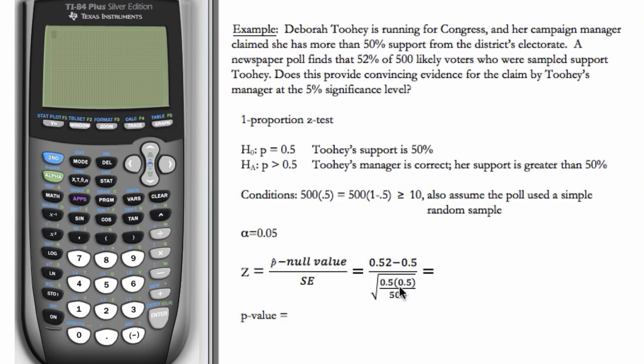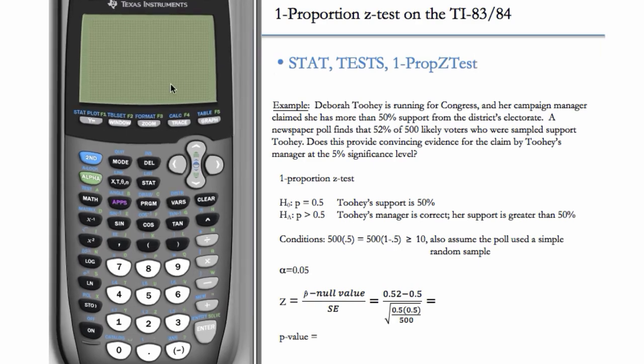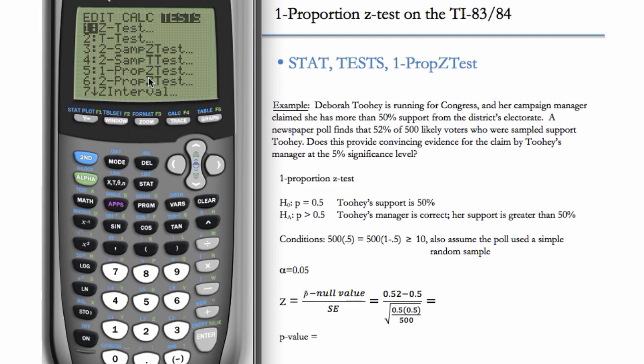Now that we have our problem set up, we can use the calculator to find the Z-statistic and the p-value. So we're going to want to go to stat-tests and do one proportion Z-test or one prop Z-test. Whenever we're working with proportions, we go stat-tests, we actually need the word prop in there. So we don't want to choose the regular Z-test. We want to choose the one proportion Z-test because we have proportions.